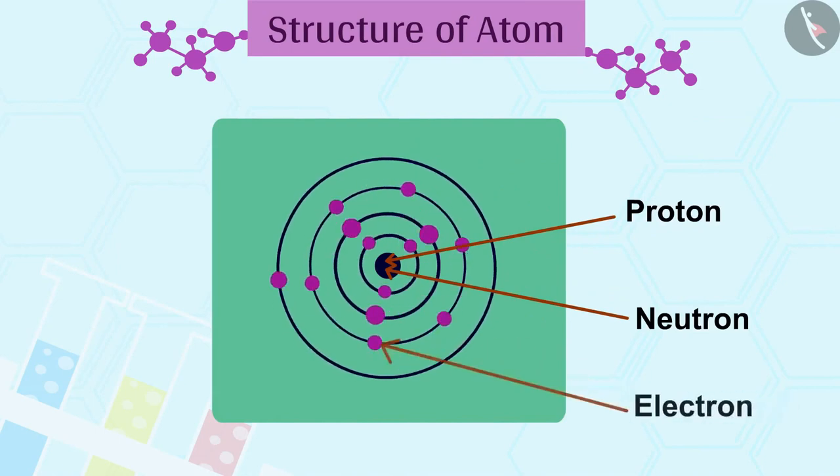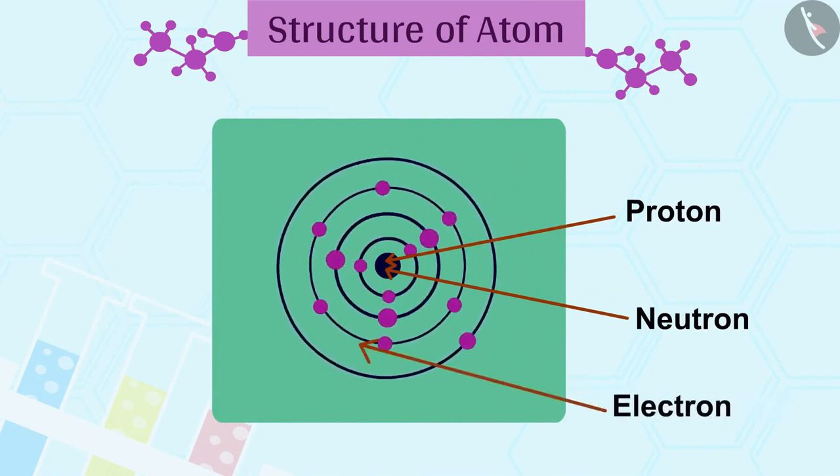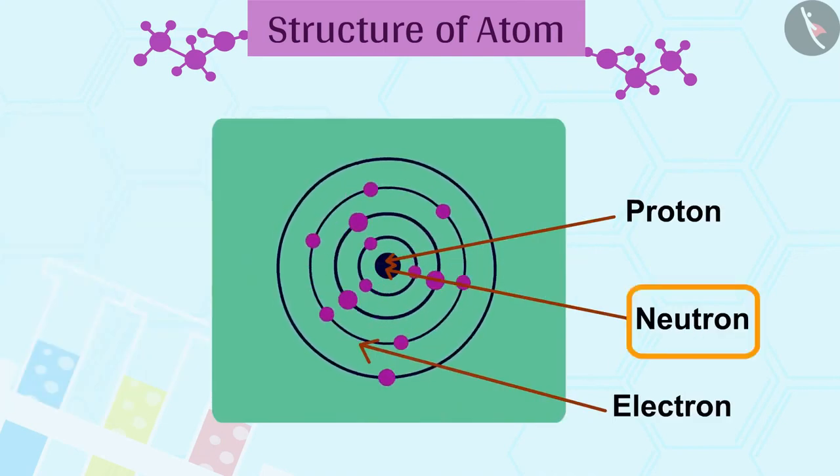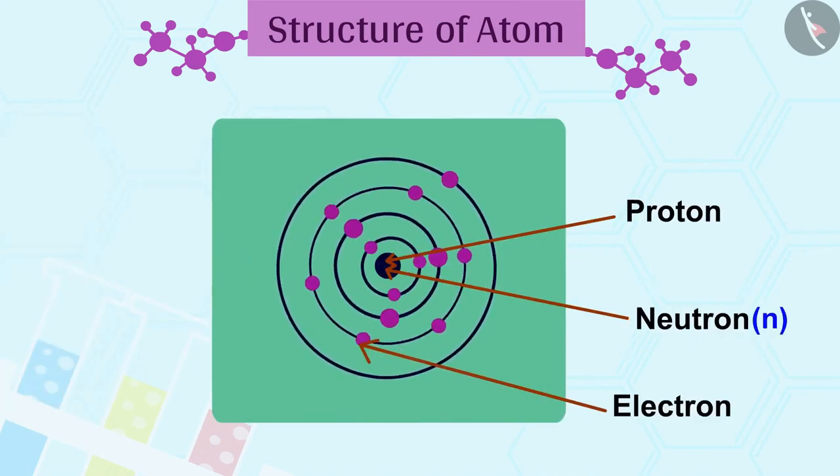Neutrons are present in the nucleus of all atoms except hydrogen. In general, a neutron is represented as N.